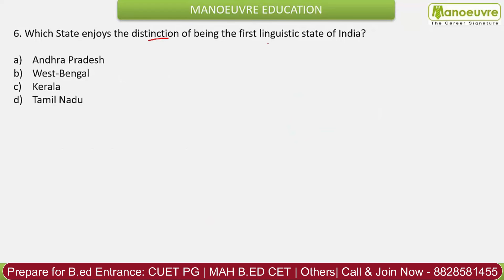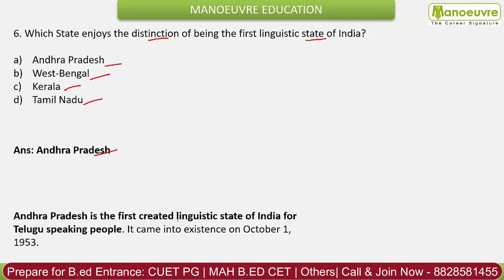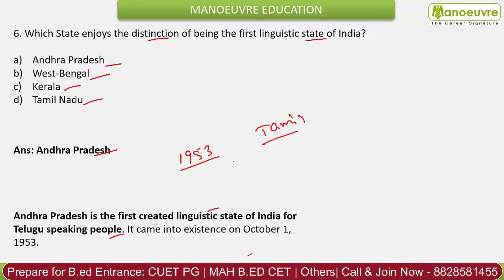Question 6: Which state enjoys the distinction of being the first linguistic state of India? The correct answer is Andhra Pradesh. Andhra Pradesh is the first created linguistic state of India, formed for Telugu-speaking people.